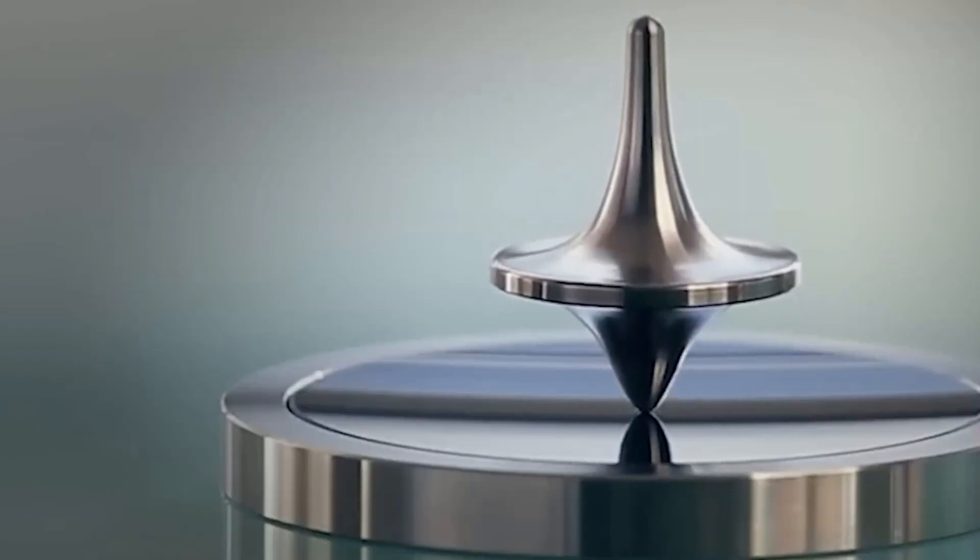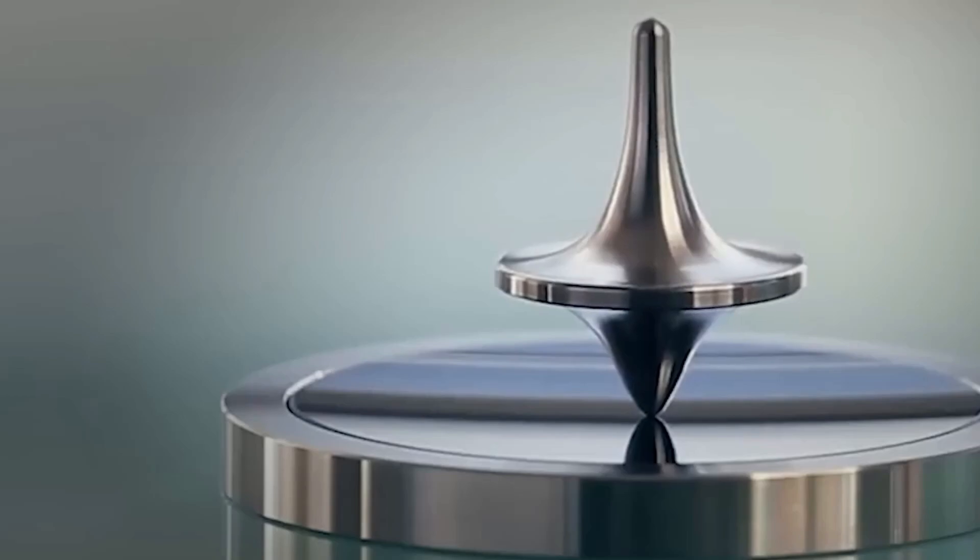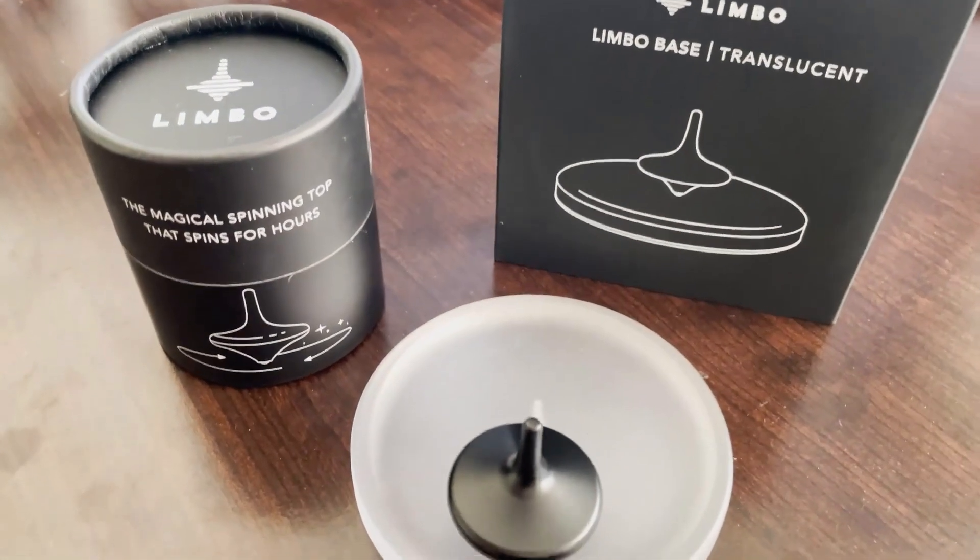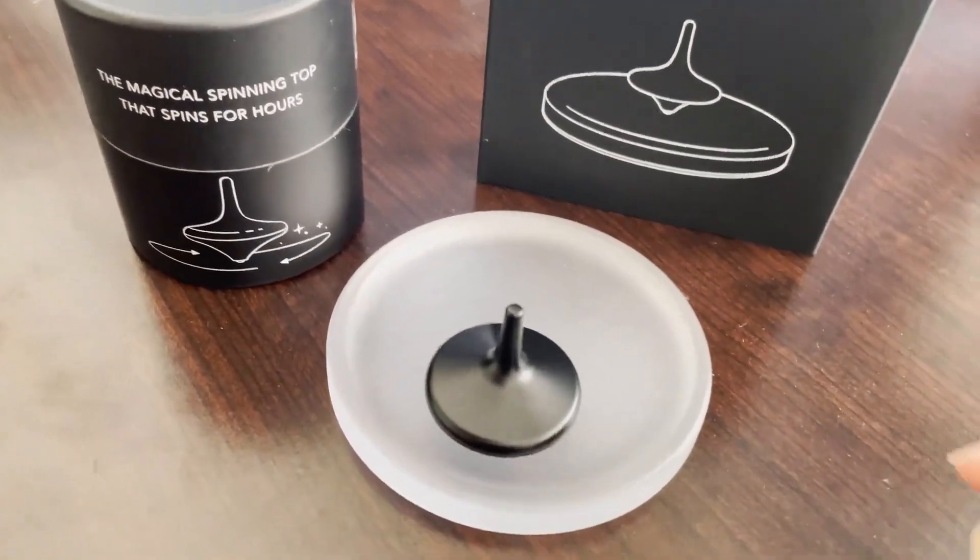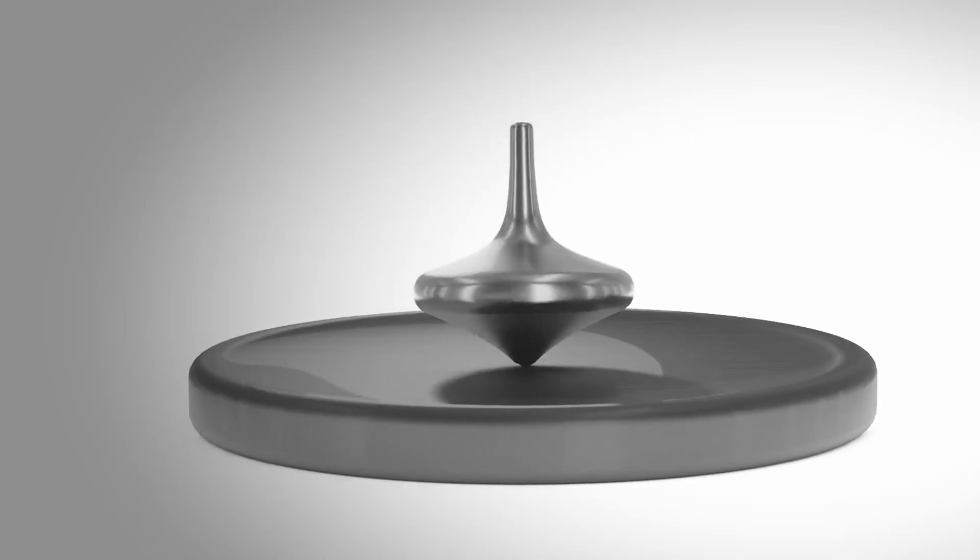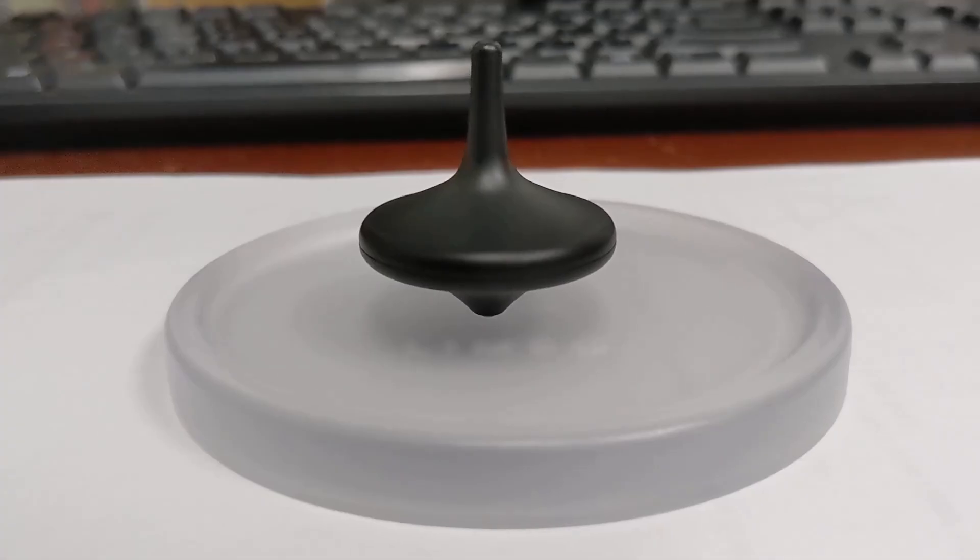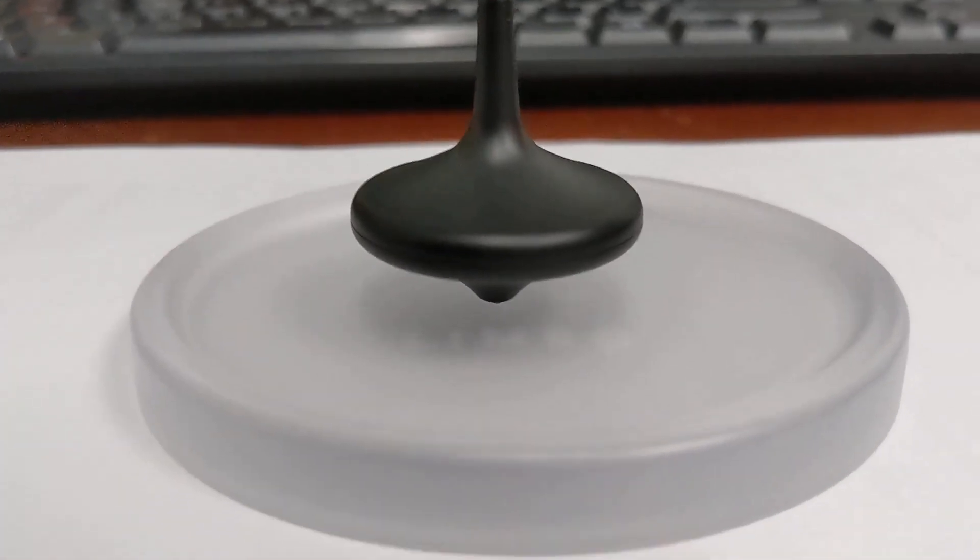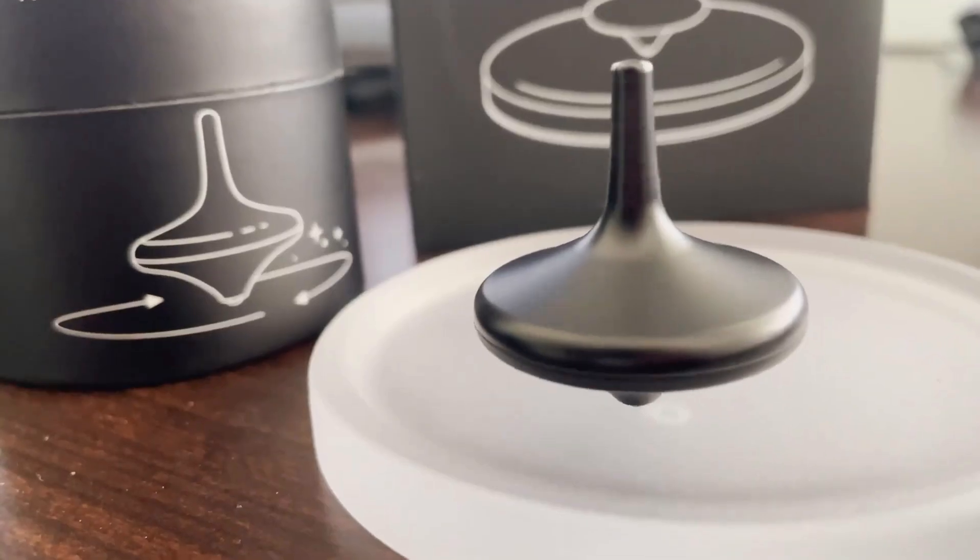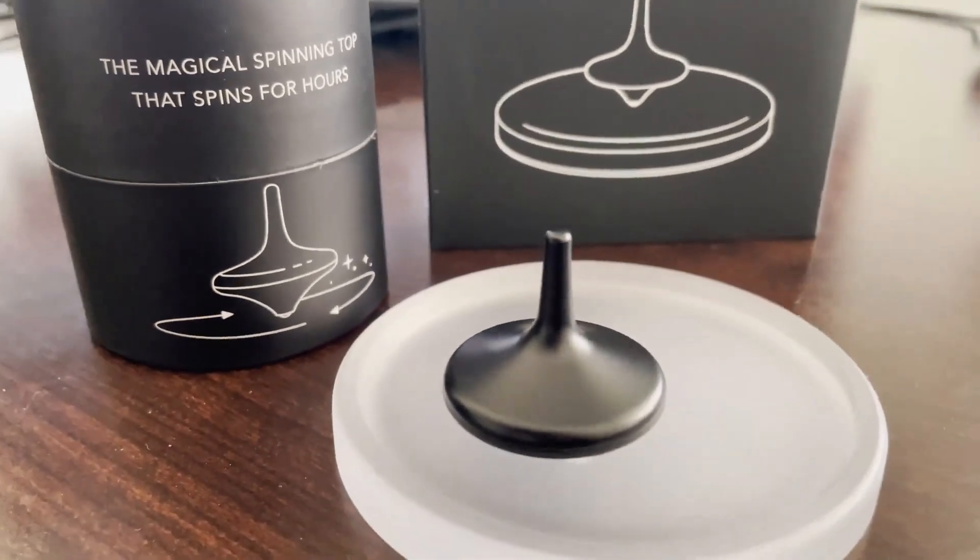Inside this unassuming top is a complex system: a rechargeable battery, a motion sensor, and an electromagnetic coil. When it spins, the sensor detects any decrease in speed. It then activates the coil, which generates a magnetic field that pushes against the surface it's spinning on, giving itself a tiny boost. This self-correcting mechanism allows it to continuously counteract the effects of friction and air resistance, enabling it to spin for an incredible 4, 5, or even more hours on a single charge.